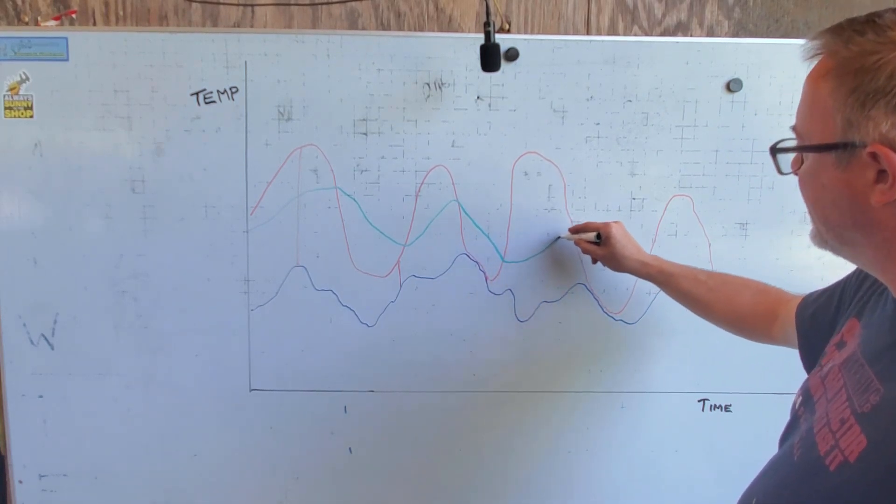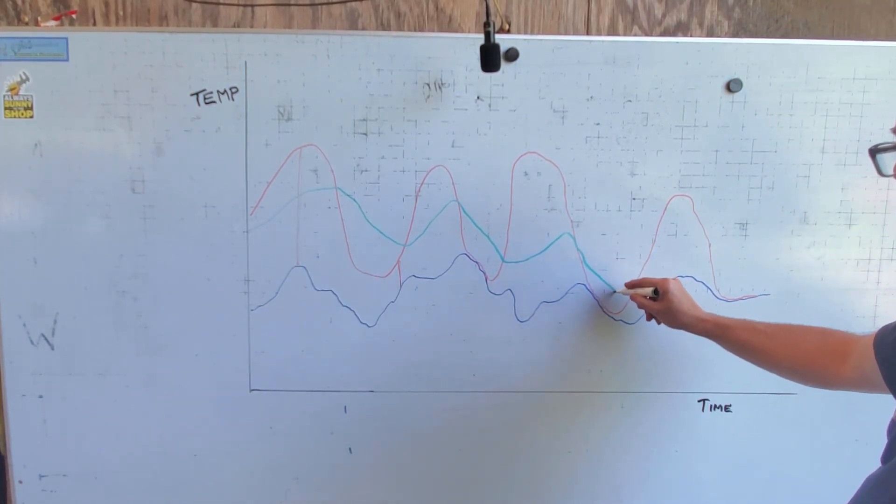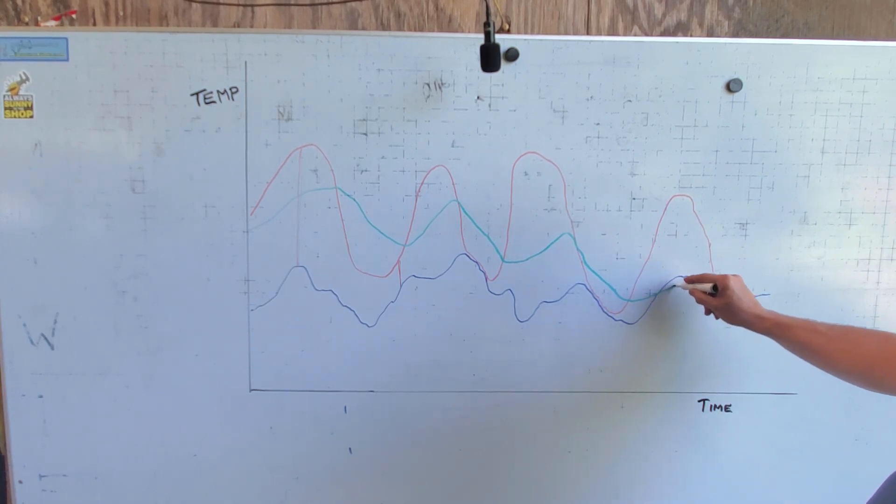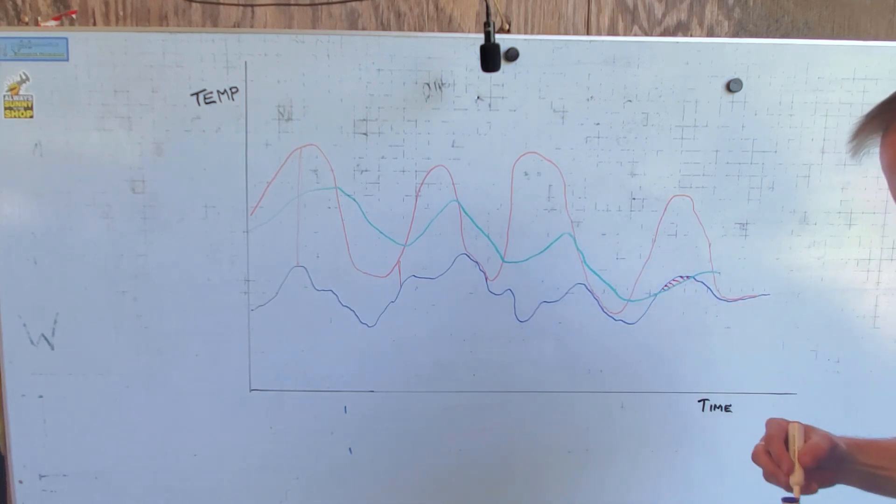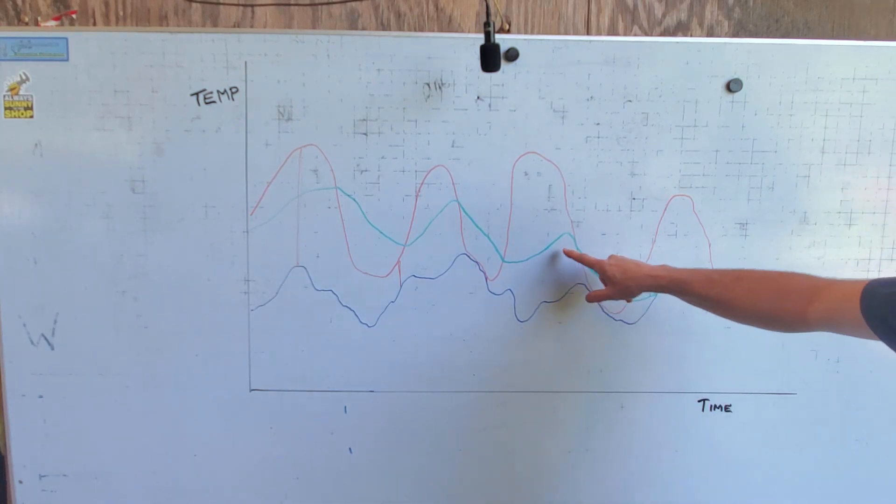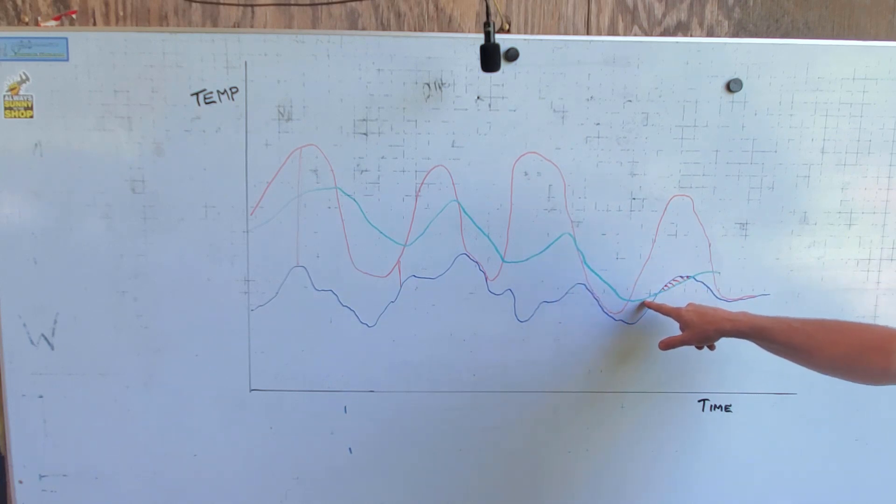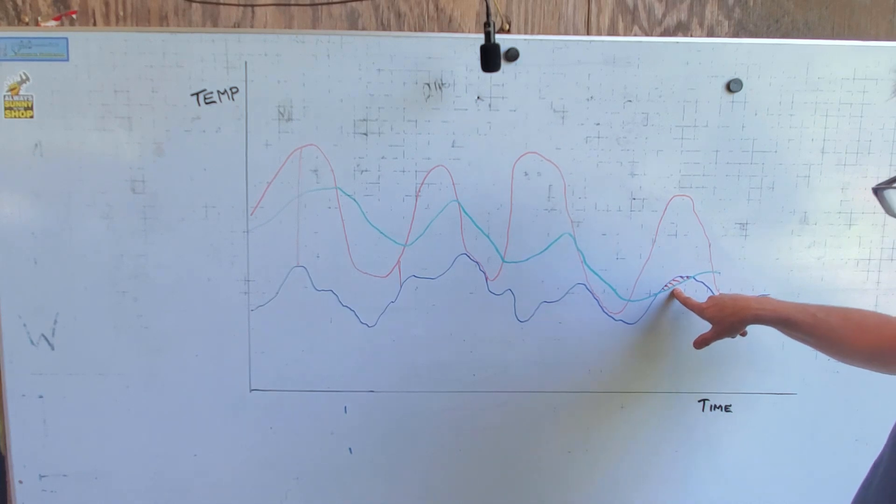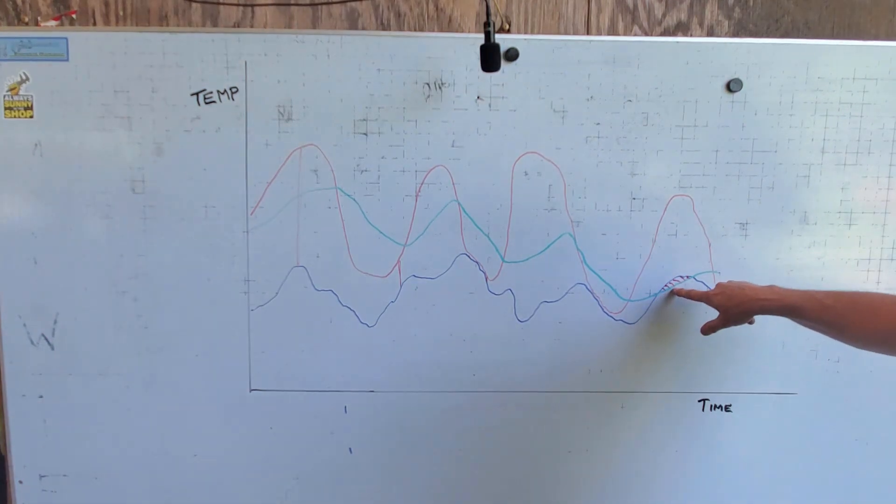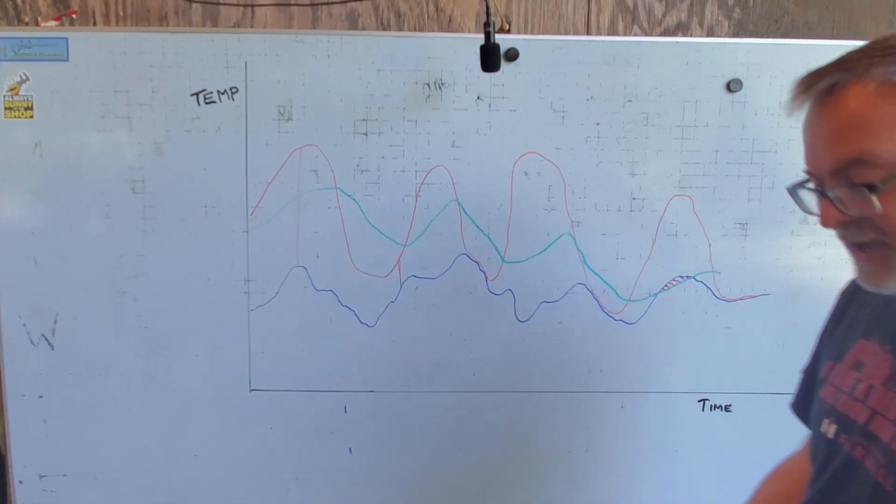Where did we get into trouble? We got into trouble right in this little zone here. And the reason we got into trouble is because the surface, the temperature of the cast iron surface all of a sudden was lower than the dew point temperature. And so this cast iron surface is now the ice-cold glass of water, and water from the air is going to condense on the surface of the machine. How do you fix this?